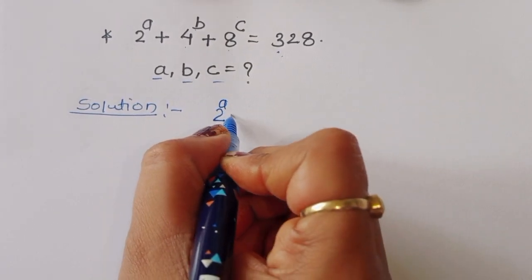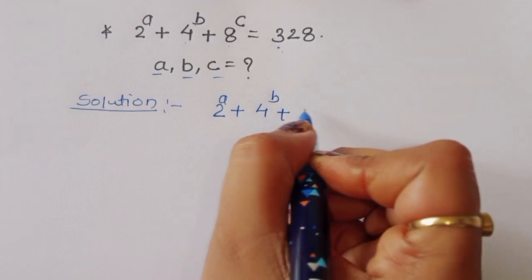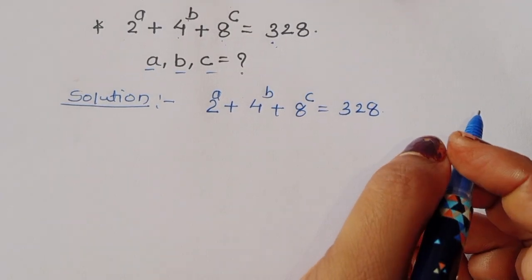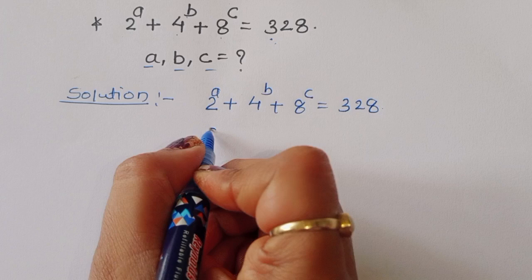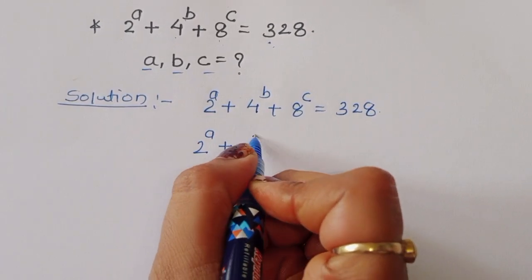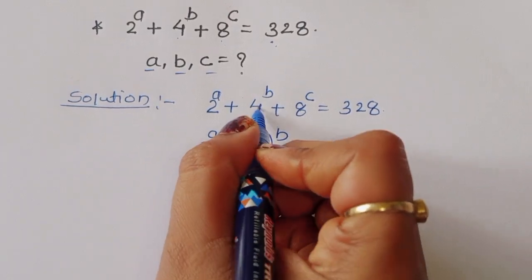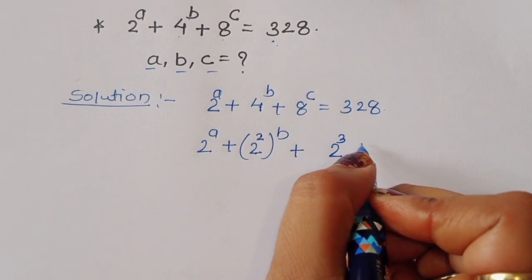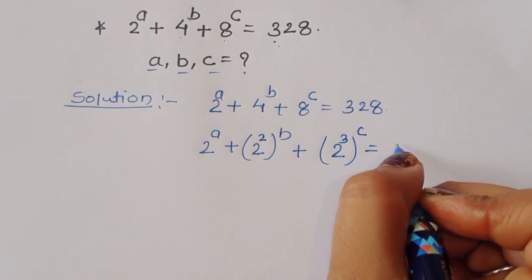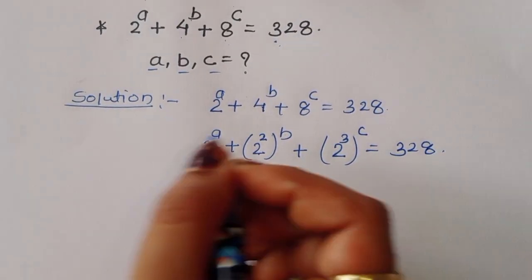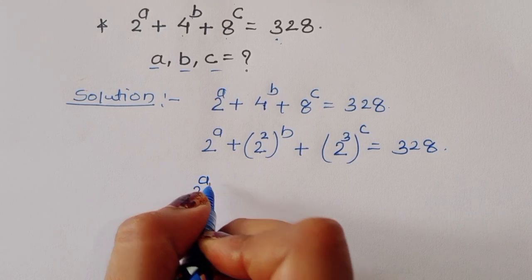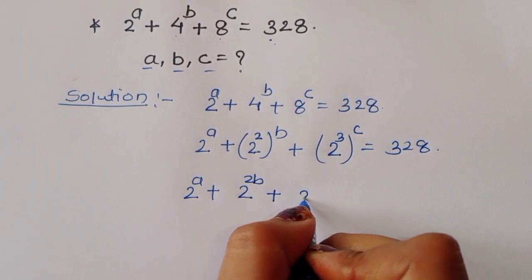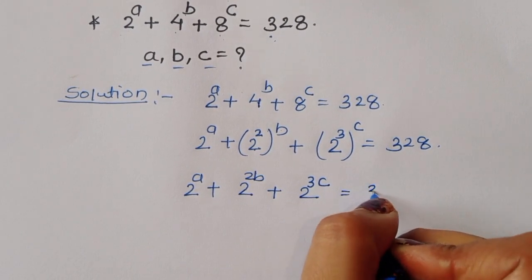First, what is given: 2 power A plus 4 power B plus 8 power C is equal to 328. We can write this as 2 power A plus 2 power 2B plus 2 power 3C is equal to 328.